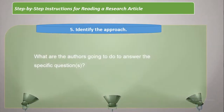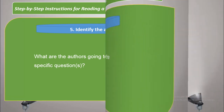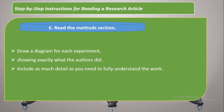The fifth step is to identify the approach — the whole method used in the paper — what the authors are going to do to answer the questions you identified in the previous step. The sixth step is to read the methods section thoroughly. You need to draw a diagram for each experiment. If there were more than one experiment, draw a separate diagram for each, showing exactly what the authors did — a complete roadmap of how they reached their results. Include as much detail as you need to fully understand the work.